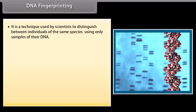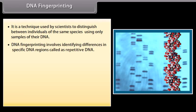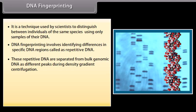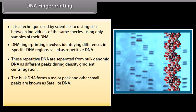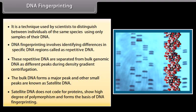DNA Fingerprinting. It is a technique used by scientists to distinguish between individuals of the same species using only samples of their DNA. DNA fingerprinting involves identifying differences in specific DNA regions called repetitive DNA. These repetitive DNAs are separated from bulk genomic DNA as different peaks during density gradient centrifugation. The bulk DNA forms a major peak and other small peaks are known as satellite DNA. Satellite DNA does not code for proteins, shows a high degree of polymorphism, and forms the basis of DNA fingerprinting.